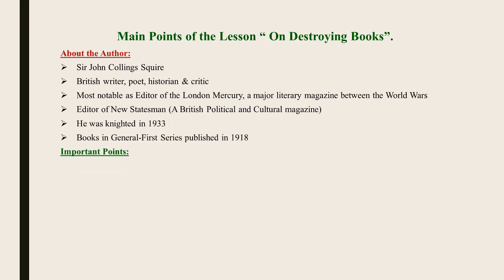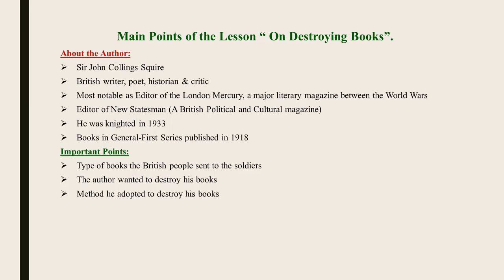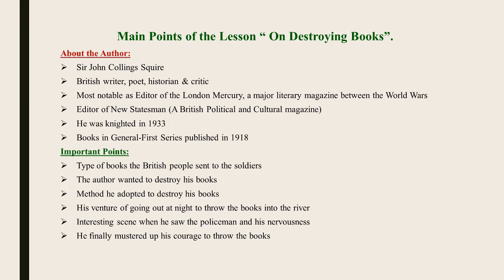Now come some important points about the lesson. The type of books the British people sent to the soldiers. The author wanted to destroy his books. The method he adopted to destroy his books. His venture of going out at night to throw the books into the river. The interesting scene when he saw the policeman and his nervousness. He finally mustered up his courage to throw the books. And the last important point is his feelings about the books after throwing them into the river.